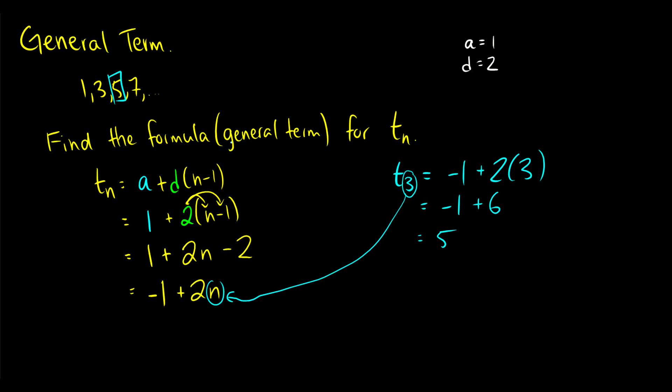So to find the general term — these words will be interchanged for the nth term — you take your formula a plus d times (n minus 1), plug in a and d, and solve for the nth term. It should be mentioned that this formula, negative 1 plus 2n, will change depending on the sequence you're given.